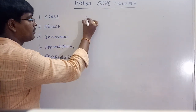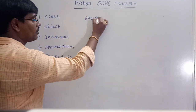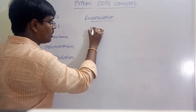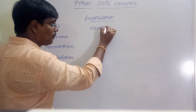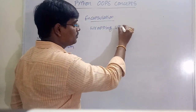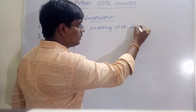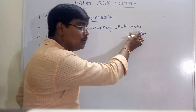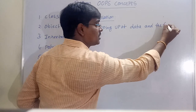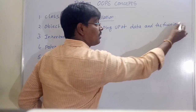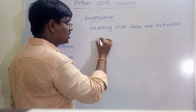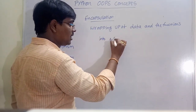Next is encapsulation. Encapsulation means wrapping up, or binding, of data — meaning the attributes — and the functions, which means the code, into a single unit.